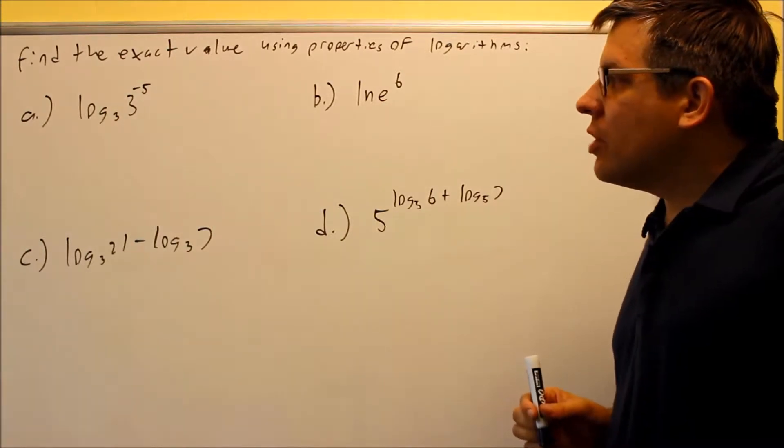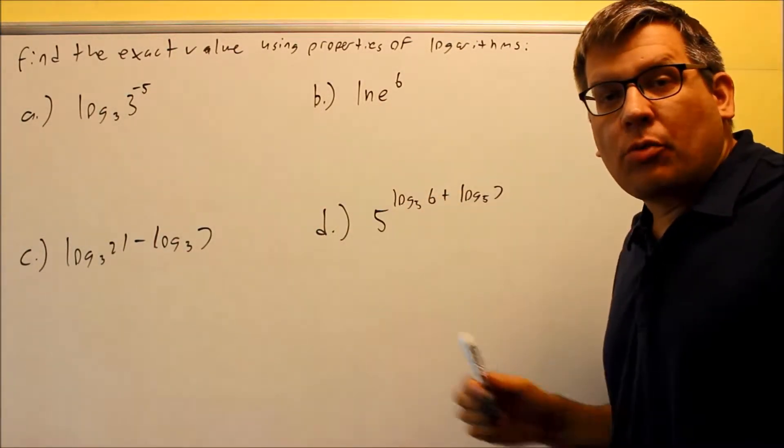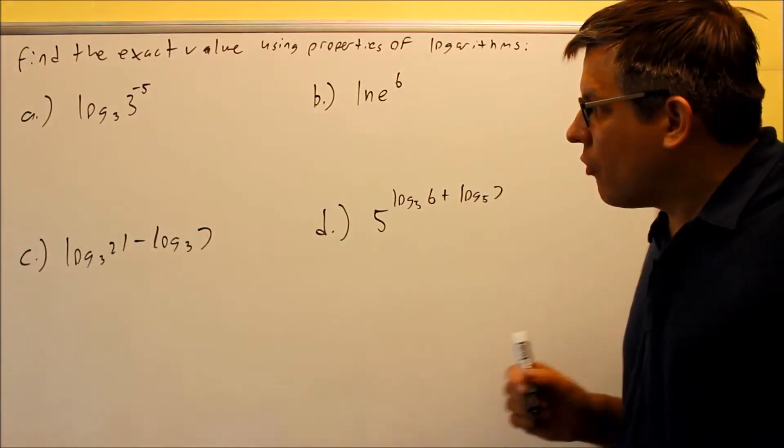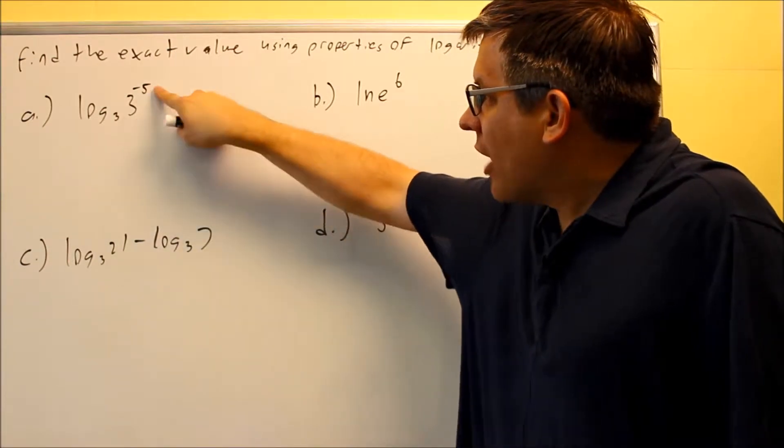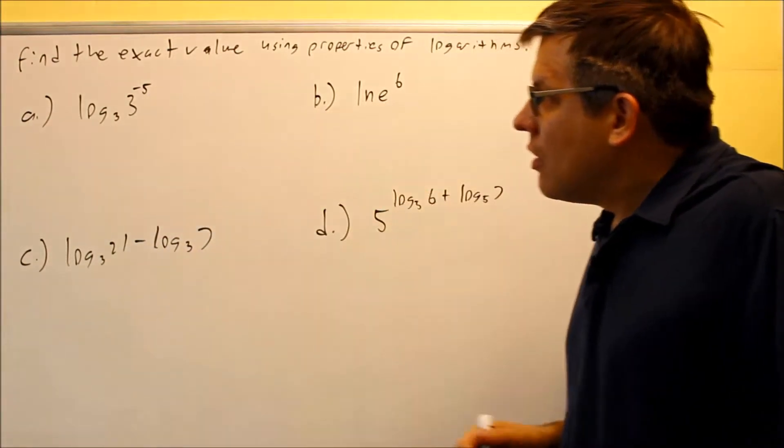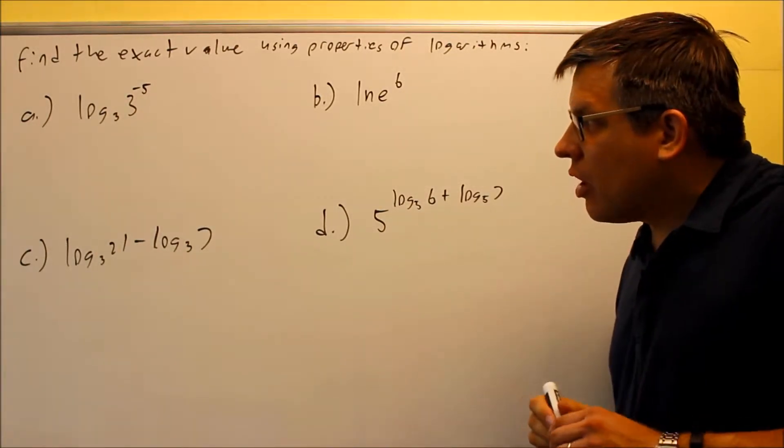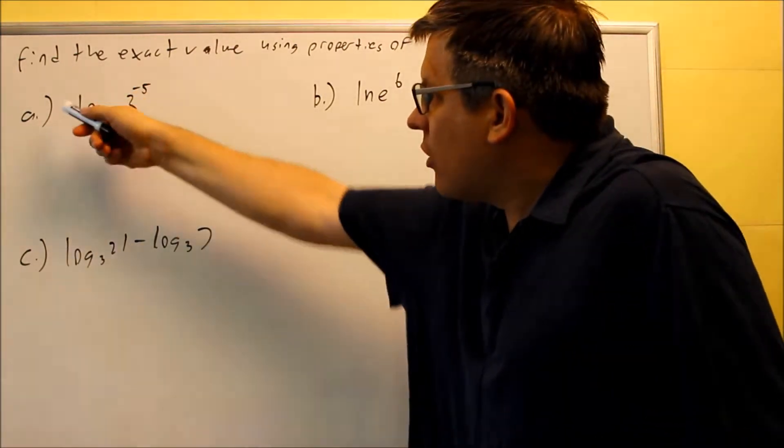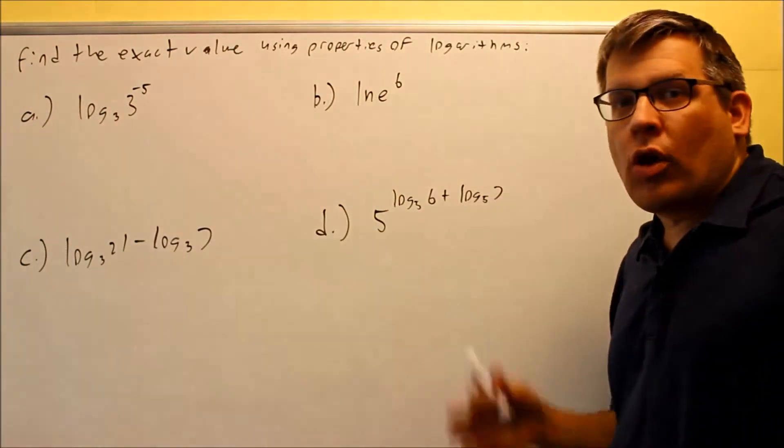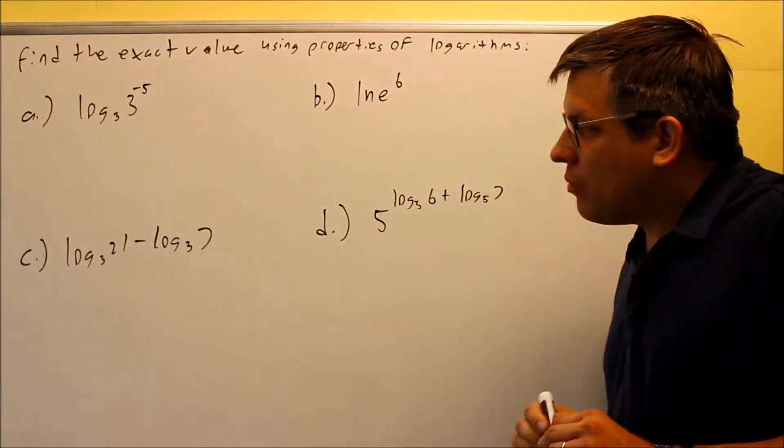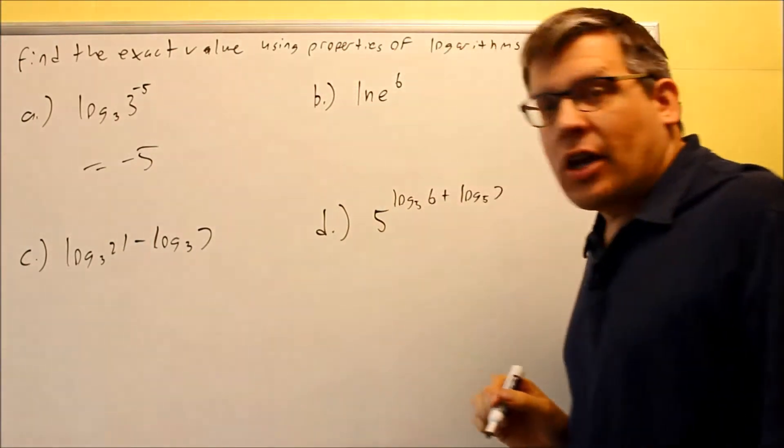The first one, log base 3 of 3 raised to negative 5. This is going to be an example of rule number 4. Rule number 4 says that if these two numbers match, your answer is just equal to the exponent. Another way of looking at that is I could bring the power down in front by using rule number 5, and then log base 3 of 3 is 1. But primarily the easiest way is since these match, the answer is simply negative 5.